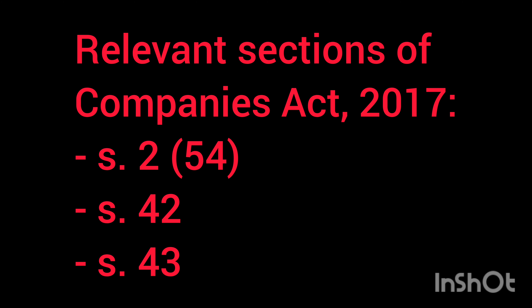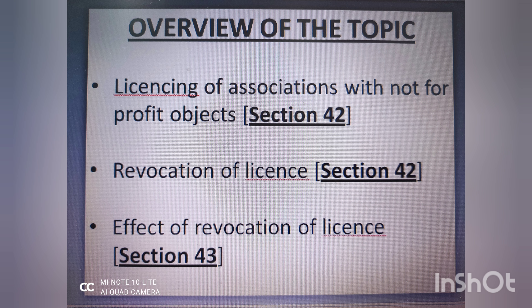Before we move on, let me very quickly tell you the relevant sections from the Companies Act 2017 relating to associations not for profit. The first one is Section 2 subsection 54. The second one is Section 42. And the third one is Section 43 of the Companies Act 2017. Section 42 is the key section regarding licensing of associations with not-for-profit objects. In this video, we have looked at an overview of the entire topic and tried to study it in context, seeing what kinds of other laws exist for NPOs or NGOs.